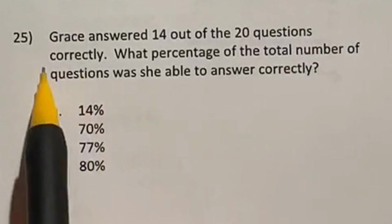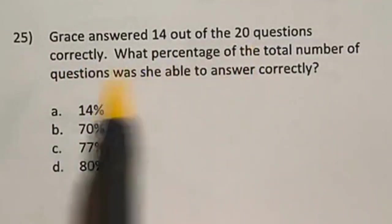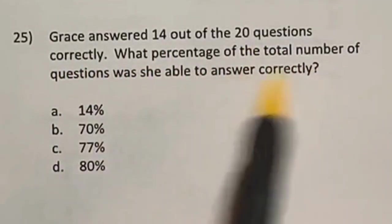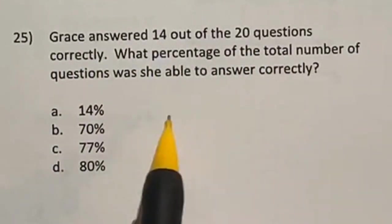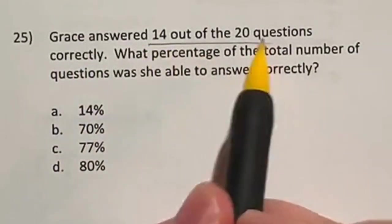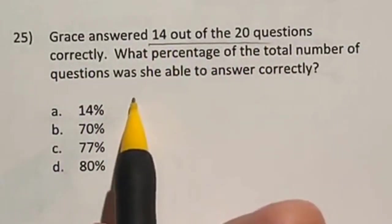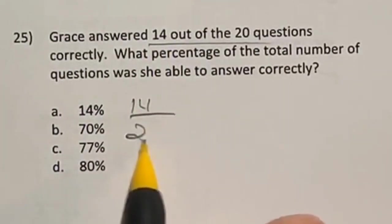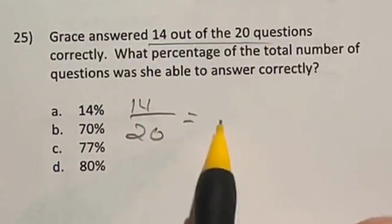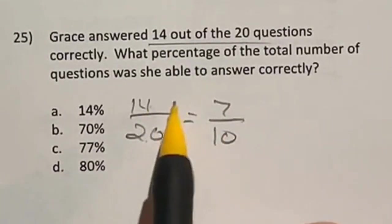Sometimes it's all about the quick tricks. For number 25, Grace answered 14 out of 20 questions correctly. What percent of the total number of the questions was she able to answer correctly? So we need to know what 14 out of 20 would be as a percent. Well, 14 out of 20, I want to go ahead and reduce this down to 7 out of 10 by dividing both the top and bottom by 2.